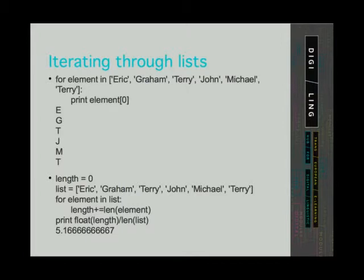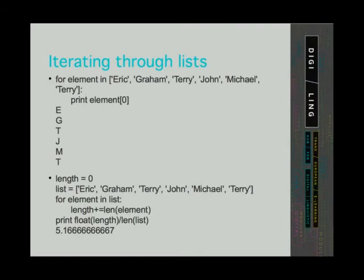We can also iterate through a list that contains elements that are strings, and print only the first character of each element. In the second example we have the same list but this time we calculate the average length of each string in the list. We do that by having a counter variable named 'length' to store the total length of all the strings. After iterating through the list, the counter 'length' has the total length of the elements. Then we print the expression where we have converted the counter 'length' to a floating point data type and divided this number by the number of elements in the list, which is 6 in our case. The program returned the average length of elements in the list, which is 5.16666... characters.